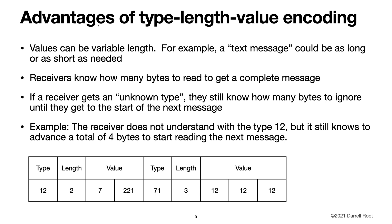Here's another example of type-length-value encoding. We have our stream of bytes. We interpret the first byte as the type, the next byte as the length — we know the length is two, so the value is two bytes. Then we know to interpret the next byte as a new type: type 71. The next byte is the length, giving a value of three, so the value is three bytes. Even if type 12 was unknown to our client, we still know the type field is one byte and the length field is one byte, so we skip two bytes and start reading type 71. We may not understand that piece of data, but we can continue and understand the next packet with type 71.